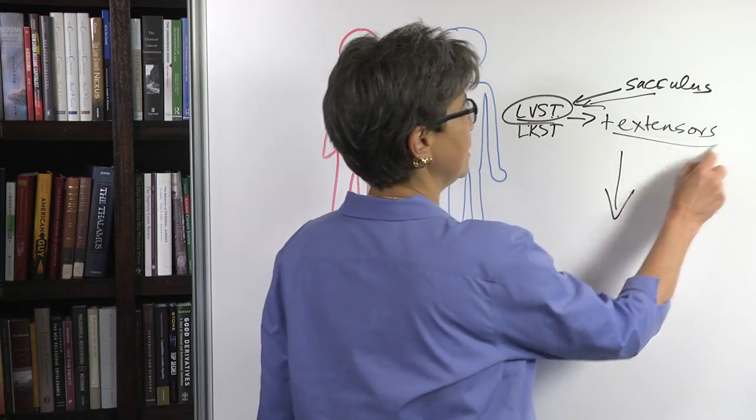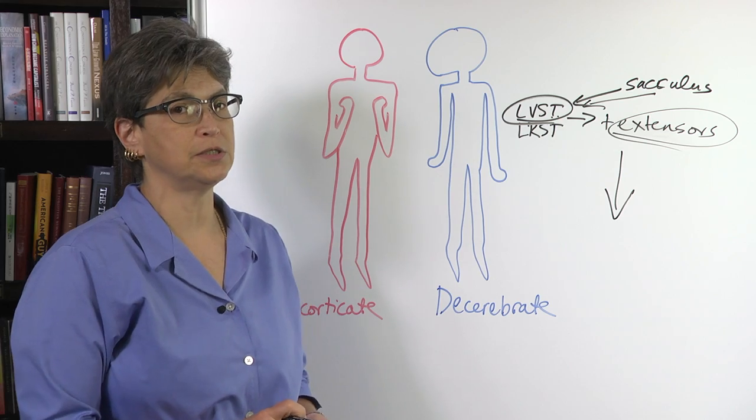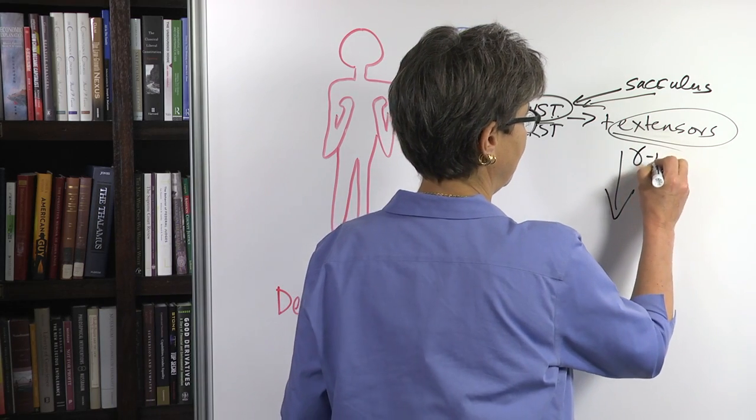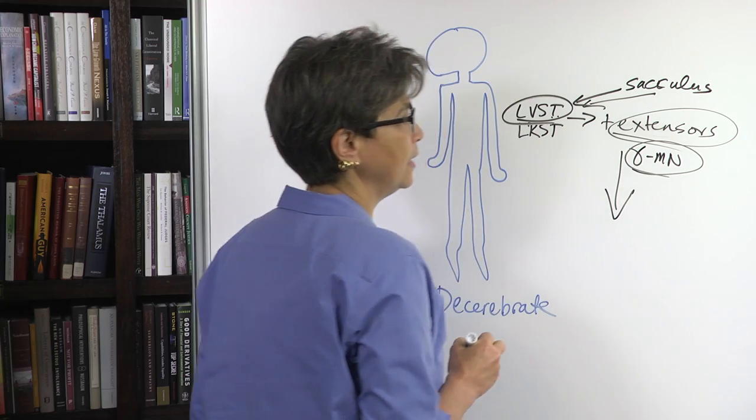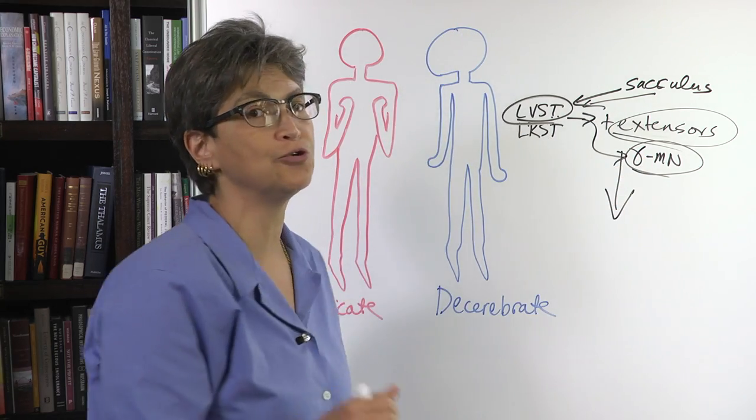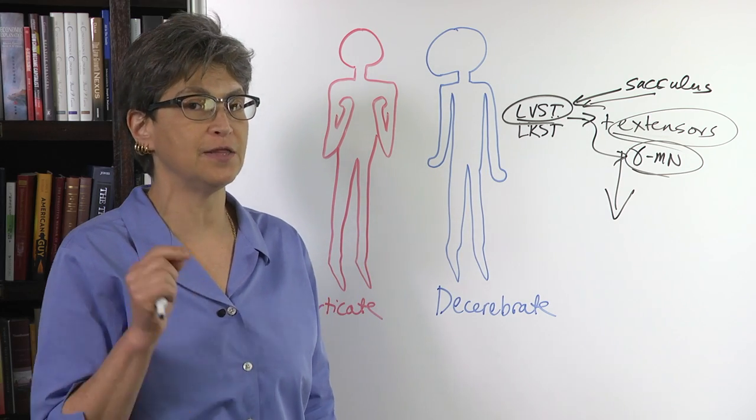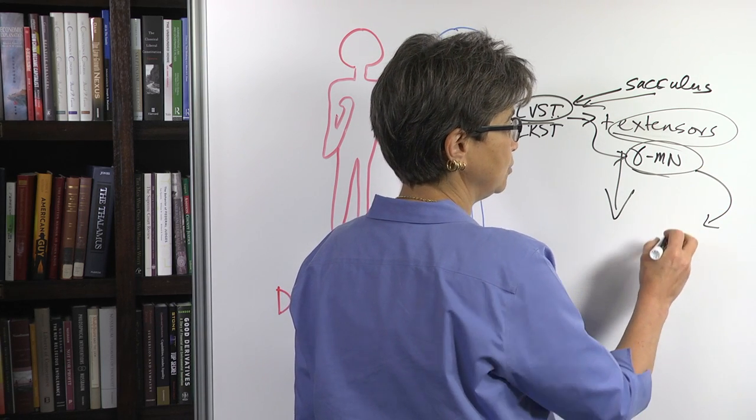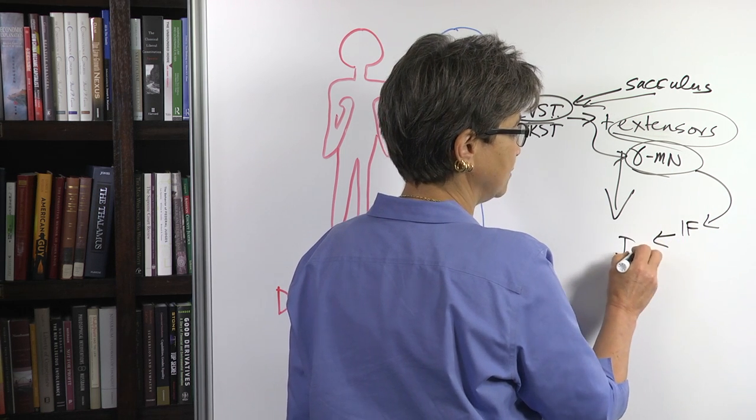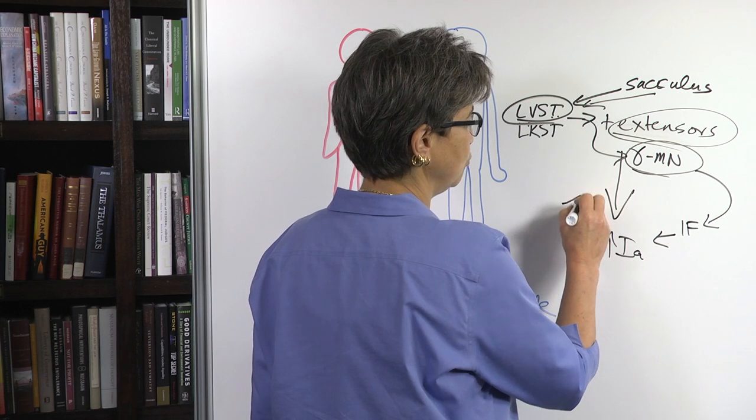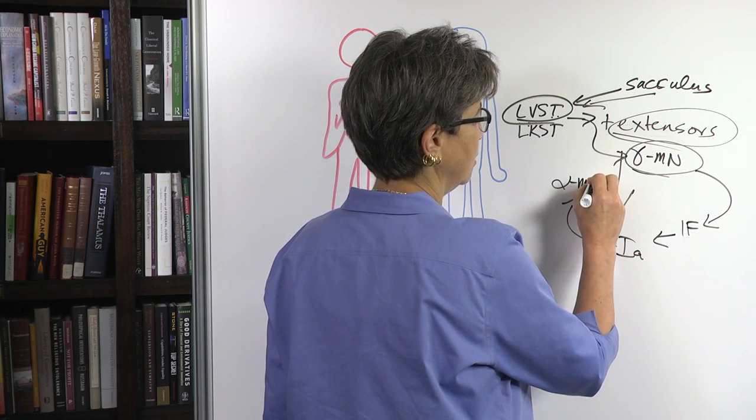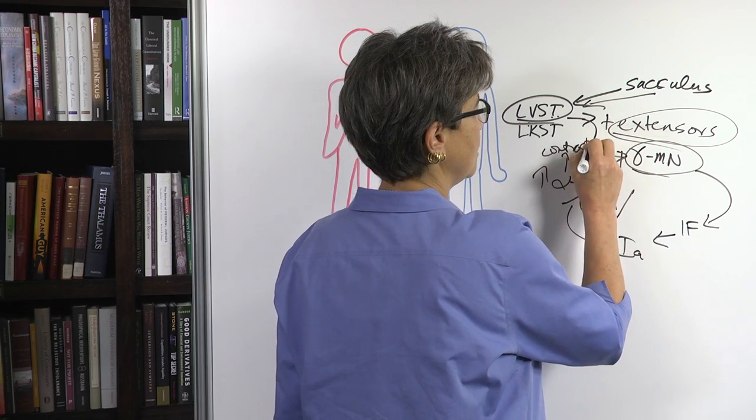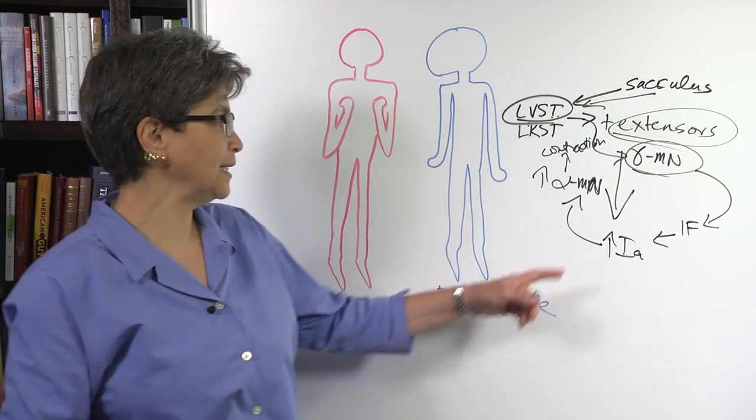The interesting thing is that it's not the alpha motor neurons to extensors that are excited. It's actually the gamma motor neurons. So this is a gamma motor neuron excitation. It's going to the gamma motor neurons, which means that you're getting extensor contraction via the gamma loop. So in other words, the gamma motor neuron contracts the intrafusal fiber, which leads to 1A activation, which leads to alpha motor neuron excitation, which leads to contraction.